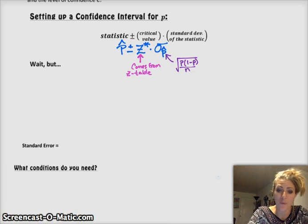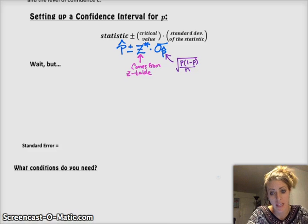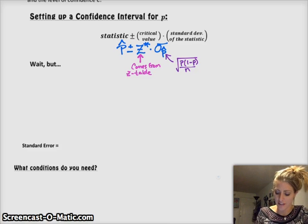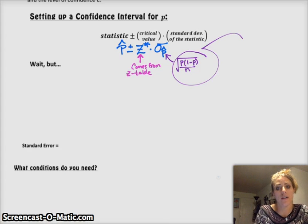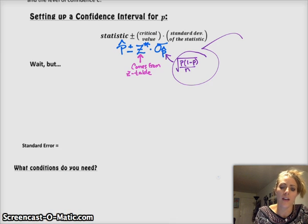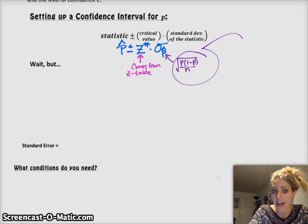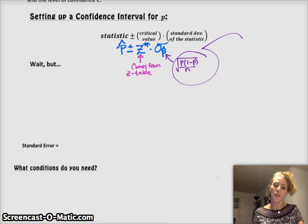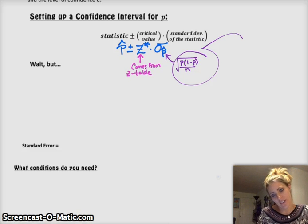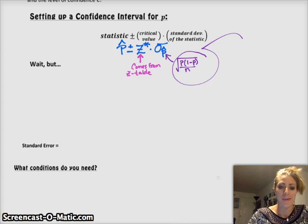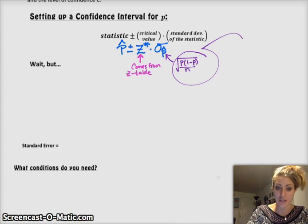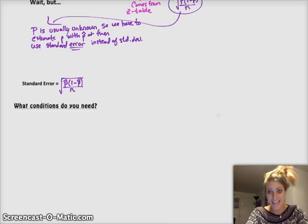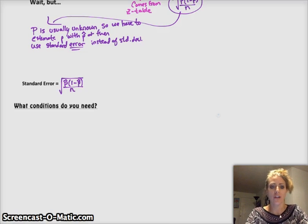The standard deviation of the sampling distribution of P-hat is the square root of P times 1 minus P over N. The problem is when we're using a confidence interval, we rarely actually know what P is. So we can't actually get the standard deviation most of the time. So instead we use standard error, which looks exactly the same as the standard deviation. It just has a P-hat instead of a P, that comes from our sample instead of the population.